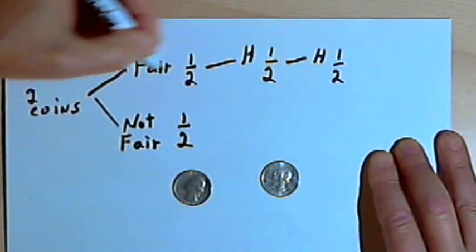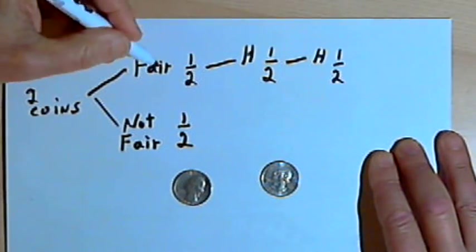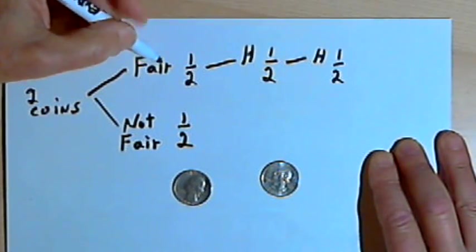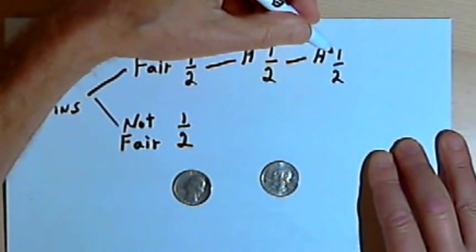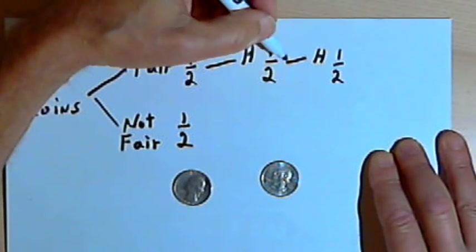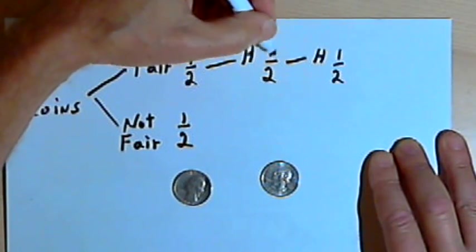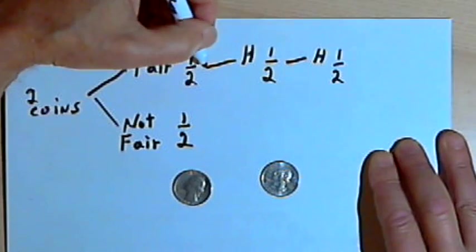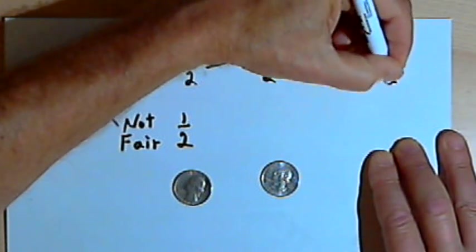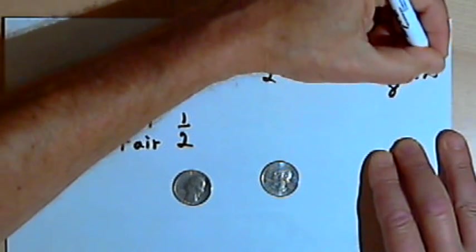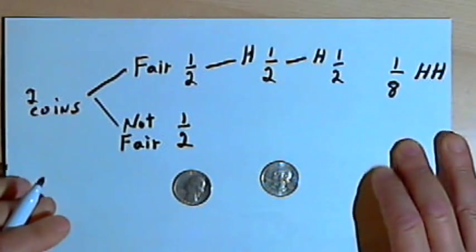So looking at this branch of the tree, I had one-half, 50% chance, of picking the fair coin, and then one-half times one-half chance, or one-quarter, of that coin coming up heads two times in a row. So if I multiply these probabilities, I'm going to get a probability of 1 over 8 that it came up heads two times in a row.